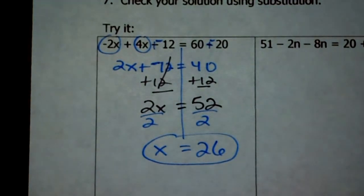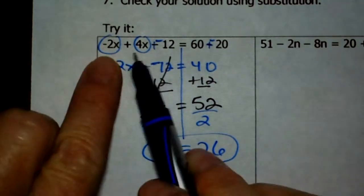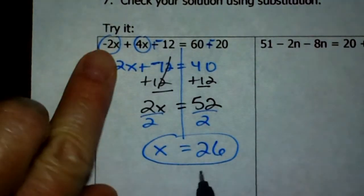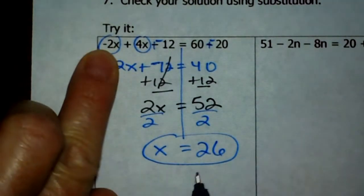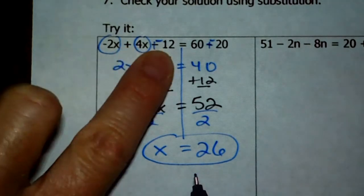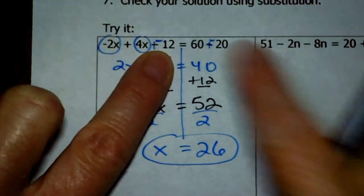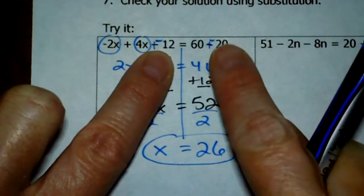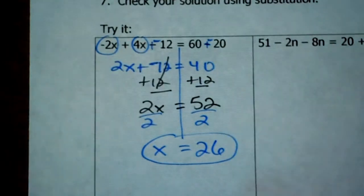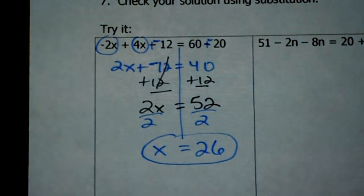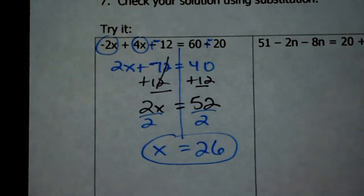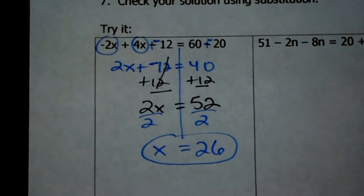When you check this, you could use your calculator. Wherever you see an x, you're going to plug in 26. You would take negative 2 times 26 plus 4 times 26 plus negative 12, and that's going to give you 40. So plug in everywhere you see an x, put a 26, and make sure one side equals the other.